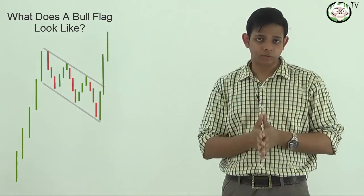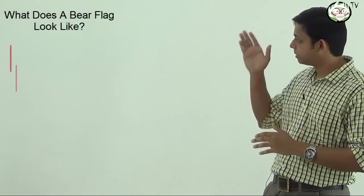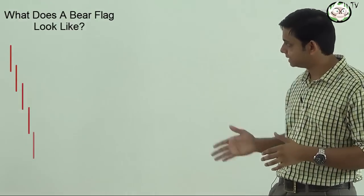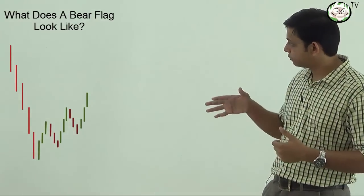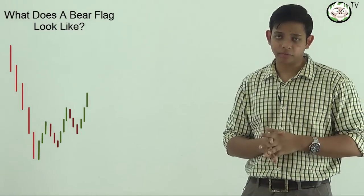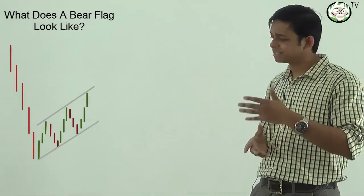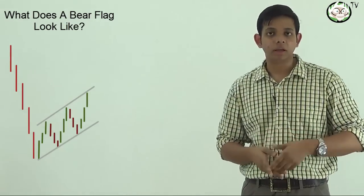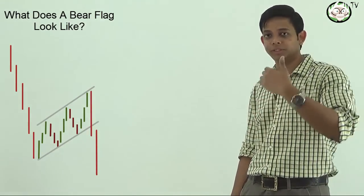It's the same for a downtrend. So I'm drawing an example here. Price is falling quite steeply. That would be our pole of the flag and then retracing a little bit on the upside giving us our flag. We can mark it by two trend lines moving upwards and basically the break of the trend line would mean that the stock is broken down and it should continue its move down.